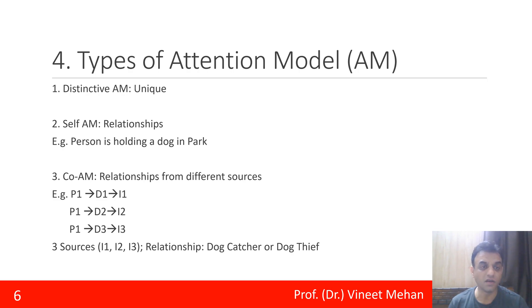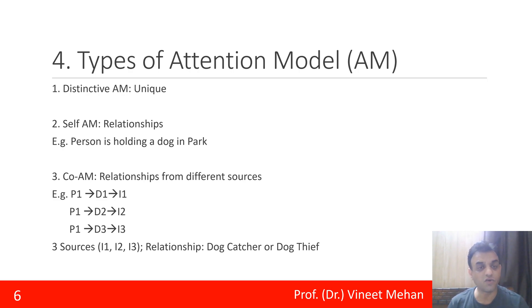In the self-attention model, consider the example: a person is holding a dog in a park. There are three objects — a person, a dog, and a park — and the relationship is that the person is holding the dog in the park. All three objects are related to each other. When we try to find such relationships present within an image, it is called a self-attention model.